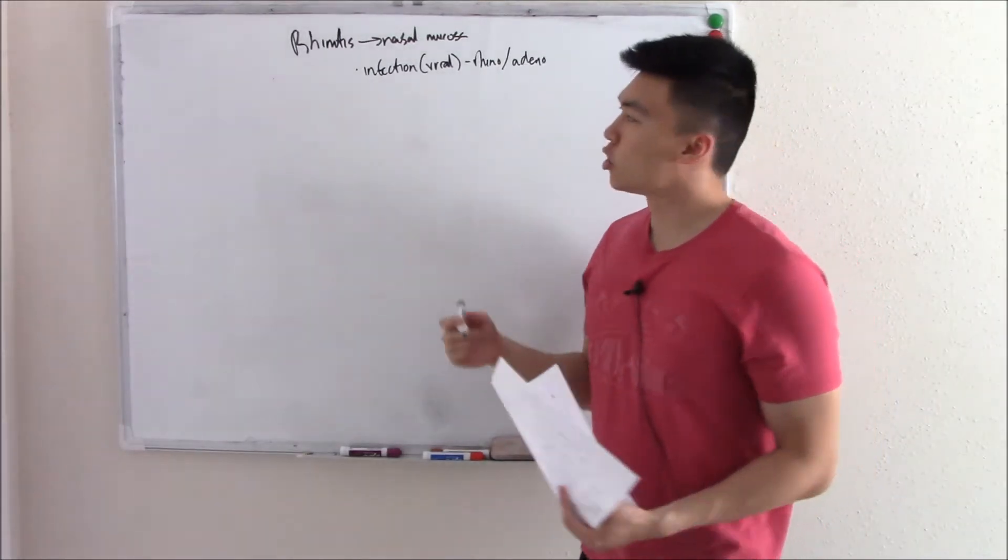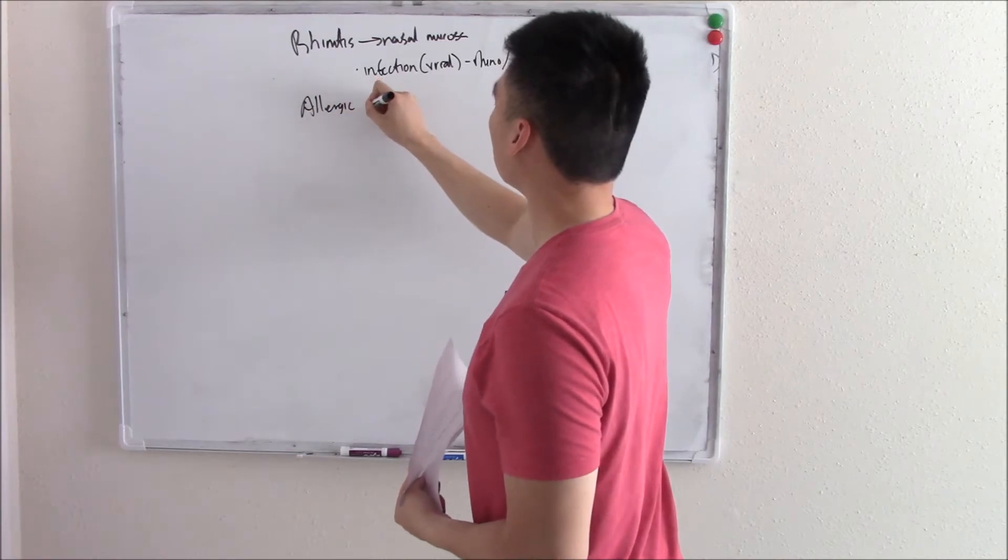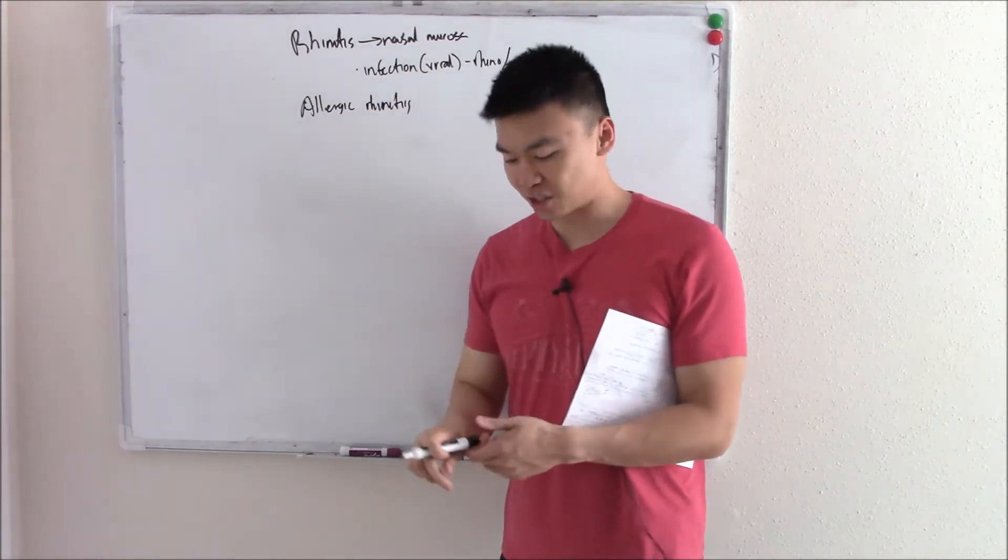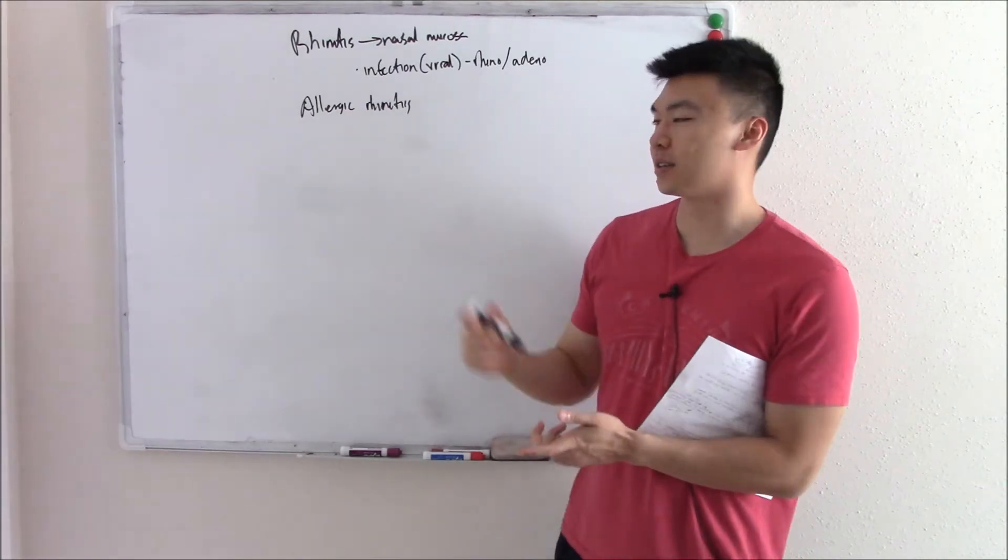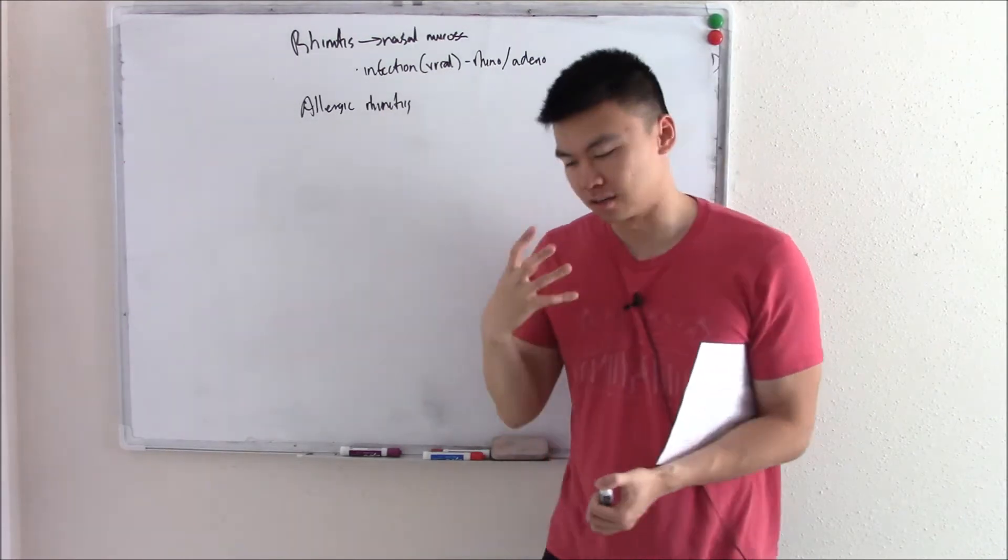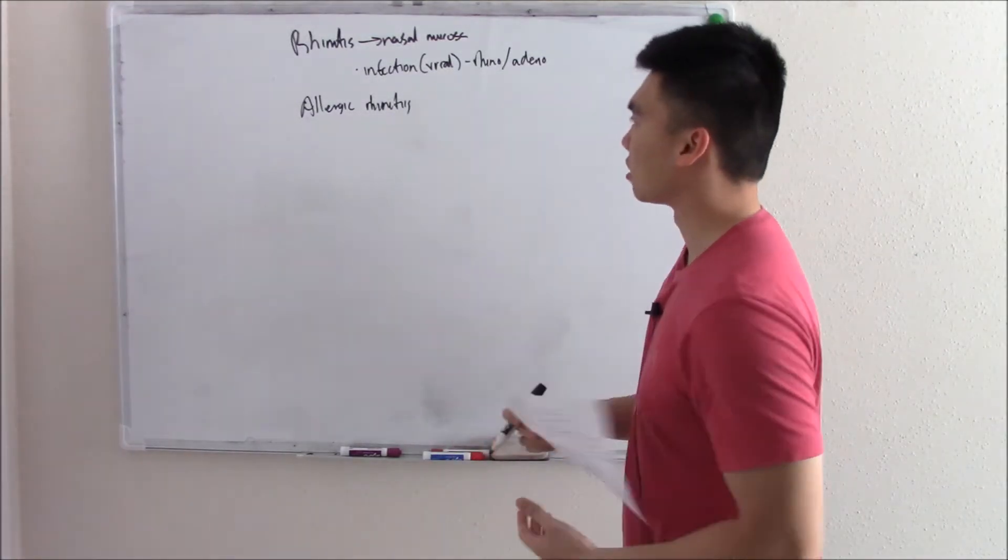You can have other types of rhinitis. You can have allergic rhinitis, and that's a fancy way of saying allergies. So unless you're a really bad history taker it should be clear the person has allergies. You know every season they get runny nose, itchy eyes, all those allergy symptoms.